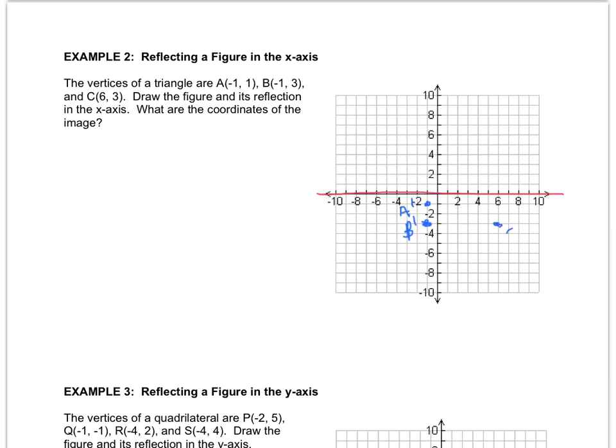Now, if you don't like this technique, you can do the change of the sign technique. That's fine as well. What are the coordinates of the image? A prime is at (-1, -1). B prime is at (-1, -3). And C prime is at (6, -3). And you can see from the coordinates that all I did was change the sign of the y value.